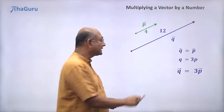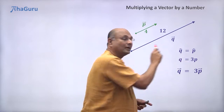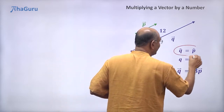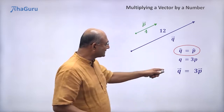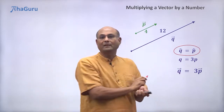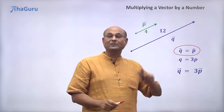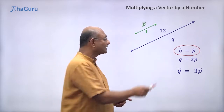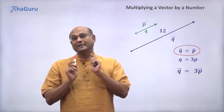Let me emphasize the fact that the directions must be the same — this is a very, very important point. You can't just say that the magnitude is 3 times and therefore they must be 3 times the vector. q vector equals 3p vector because the magnitude is thrice — that is not enough. The directions must also be the same.